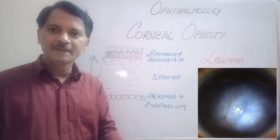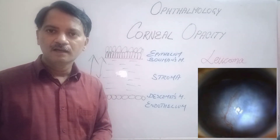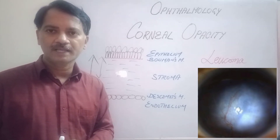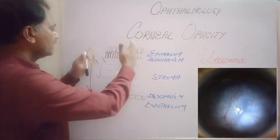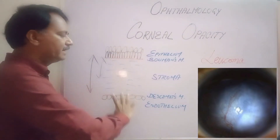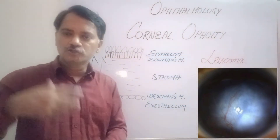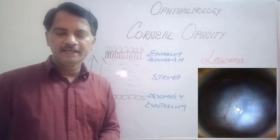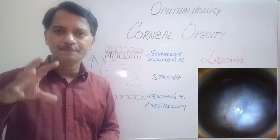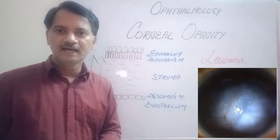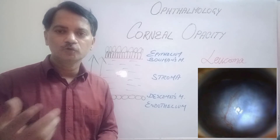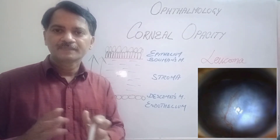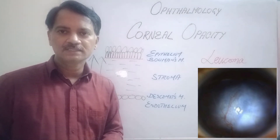To treat leucomatous corneal opacity, we have to perform a penetrating keratoplasty. In this procedure, the entire opacity — the full thickness of the cornea — is removed, and a healthy cornea taken from a donor is placed in its position, thereby restoring some vision to the patient.